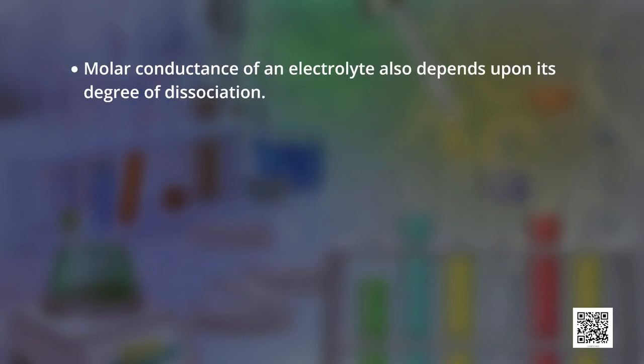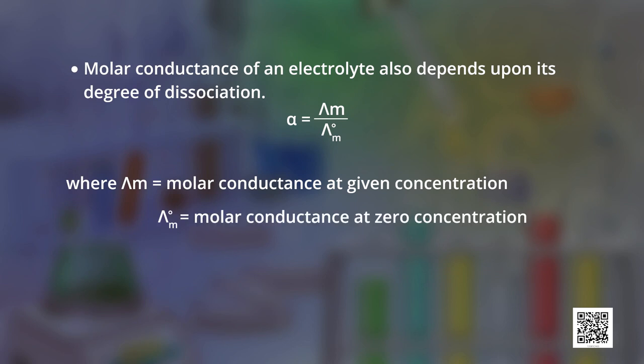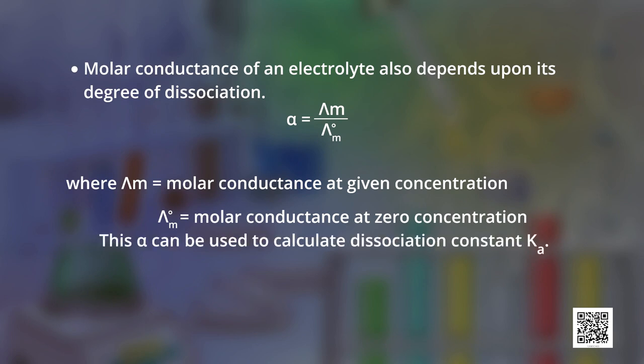Molar conductance of an electrolyte also depends upon its degree of dissociation. Alpha (α) is the degree of dissociation, equal to λm / λm⁰, where λm is the molar conductance at a given concentration and λm⁰ is the molar conductance at zero concentration. This degree of dissociation can be used to calculate the dissociation constant Ka: Ka = Cα² / (1 − α), where α is the degree of dissociation and C is the concentration.